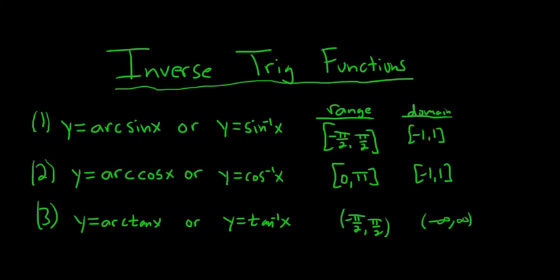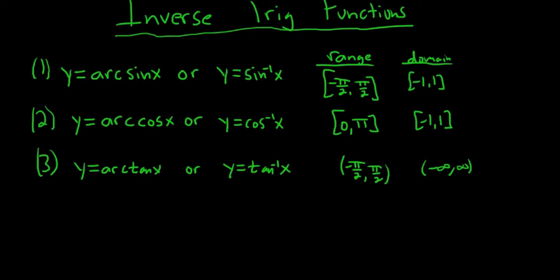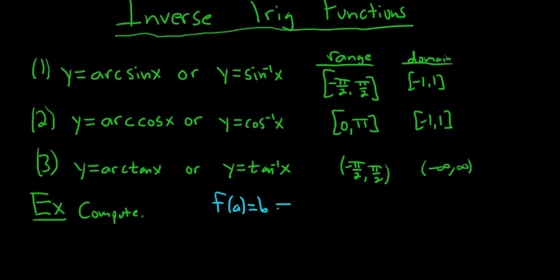Let's jump in and do some examples. Before doing so, let me mention something. If you have a function f that takes a and sends it to b, then the inverse function takes b and sends it back to a. So if the inverse takes b and sends it to a, the function takes a and sends it back to b. A function and its inverse undo each other.